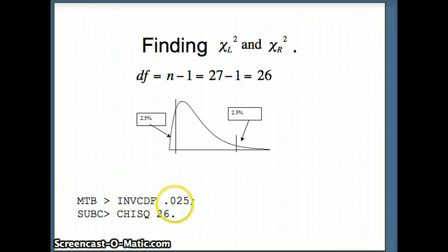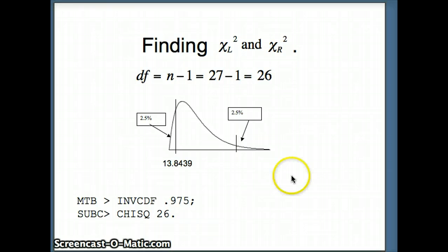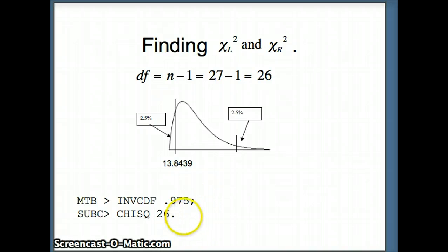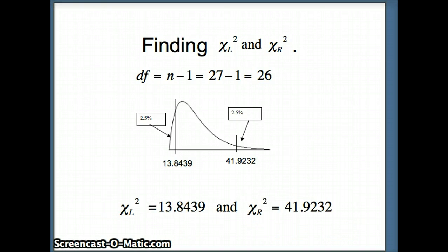The Minitab command is INVCDF 0.025, semicolon, chisquare 26 — that gives 13.8439, which is chi-squared left, the 2.5th percentile. For chi-squared right, since there's 2.5% on the right, there's 97.5% on the left, so we use INVCDF 0.975, semicolon, chisquare 26, which gives 41.9232. So chi-squared left is 13.8439 and chi-squared right is 41.9232, and we'll use those in our formula.